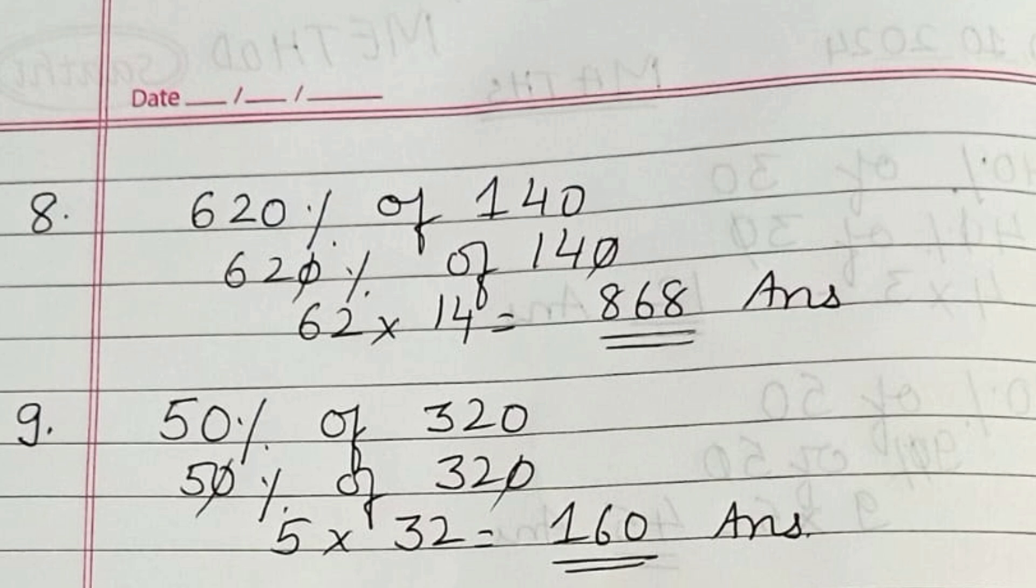The ninth one: 50 percentage of 320. Cut zeros from both sides. You get 5 multiply 32, which equals 160.